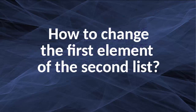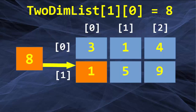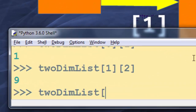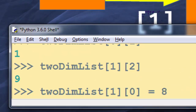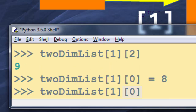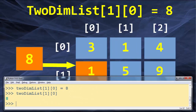Now let's see a simple example of how to change an element of our two-dimensional list — for example, how to change the first element of the second list. The second list has index 1 and the first element of that list has index 0. We want to change that value to a new value, in this example number 8. So we get the element from its position and change it to the new value. I'm going to type this in Python IDLE — we change the first element of the second list to number 8, and now its value is number 8.